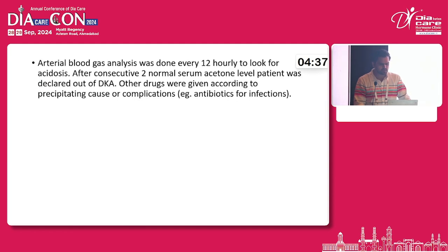Arterial blood gas analysis was done every 12 hours to look for acidosis. After two consecutive normal serum acetone levels, patients were declared out of DKA. Other drugs were given according to the precipitating cause or complication, for example antibiotics for infections.